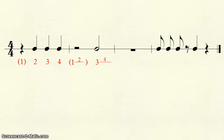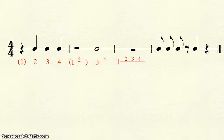Next is a whole rest, which receives 4 beats. So we write a 1, a line, and put beats 2, 3, and 4 on the line. Since it is a rest, we put the whole thing in parentheses.